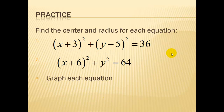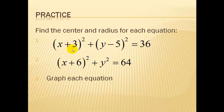For this problem, we're given the equation and need to extract the center and radius. It's fairly easy. Remember our template is x minus h, so we have to take the opposite of the number. Our center on this one is negative 3 and positive 5, with a radius of the square root of 36, or 6. For the second equation, the center is negative 6 and 0, and the radius is 8.